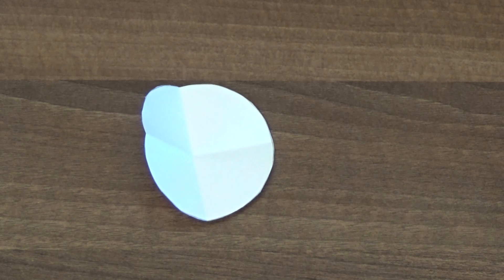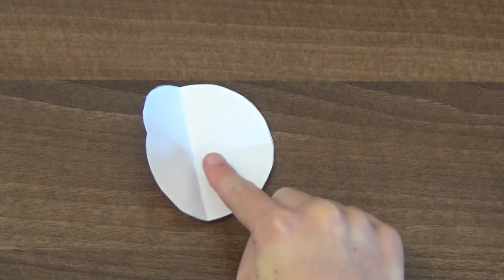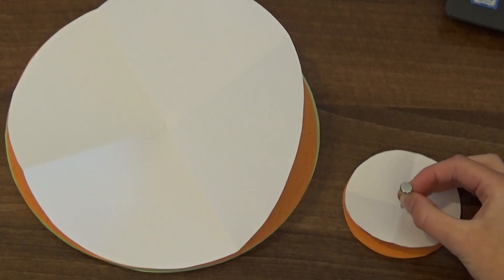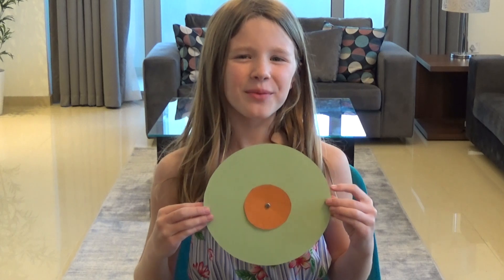Again, where the lines meet is the center. I am now going to push the split pin through the center of the small and large circles. I now have my wheel.